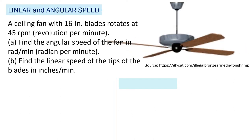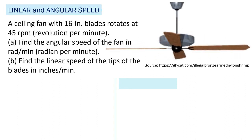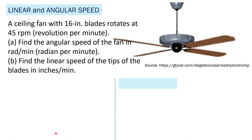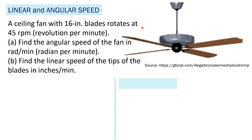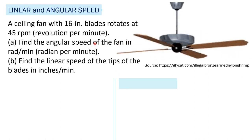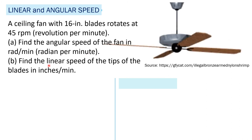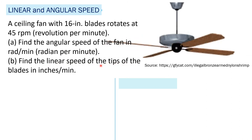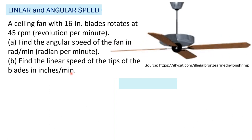Next example: A ceiling fan with 16-inch blades rotates at 45 revolutions per minute. The 16-inch blades represent the radius since the rotation is circular. Find the angular speed in radians per minute and the linear speed of the tips of the blades in inches per minute.